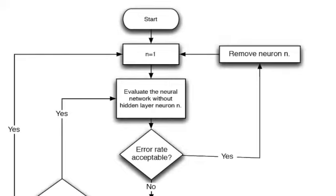If it is, then we remove neuron n and we start the process over again. If the error rate is not acceptable, we'll continue and we'll move on to the next part of the chart.